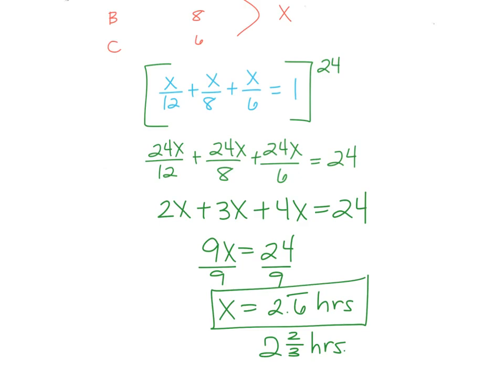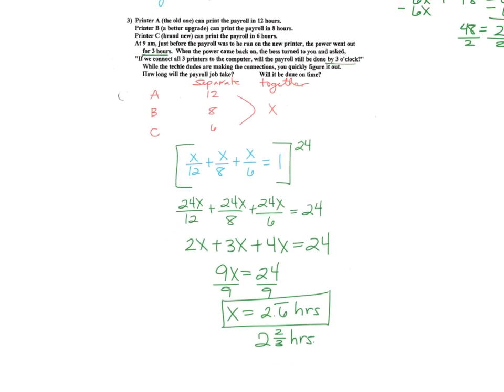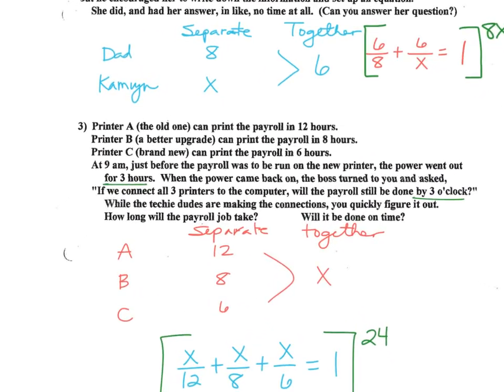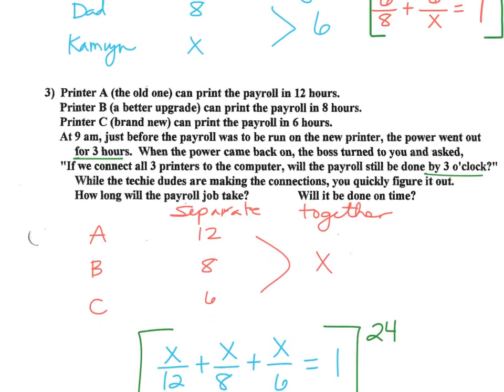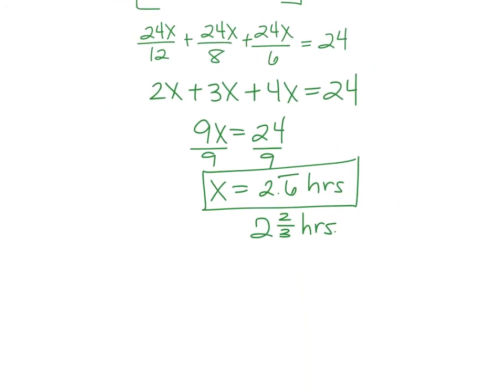The question, though, is, is it going to be done in time? So, it's going to take 2 and 2 thirds hours. If it shut down at 9 for 3 hours, that means it started back up at 12 and they need to be done by 3. Done in time. Isn't that fantastic? So, this would be, yes, it will be done in time. With how much time to spare? A third of an hour, which is 20 minutes, right? 20 minutes to spare. Lots of time to spare.